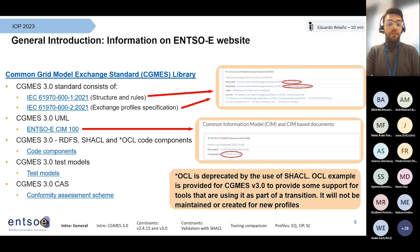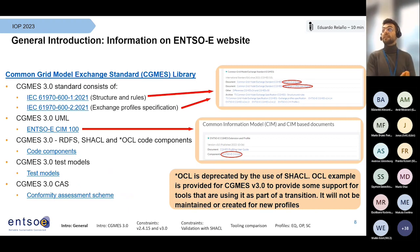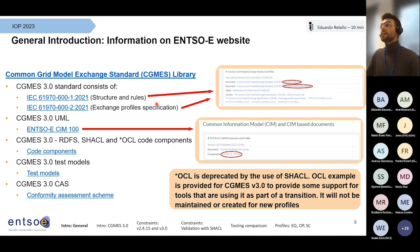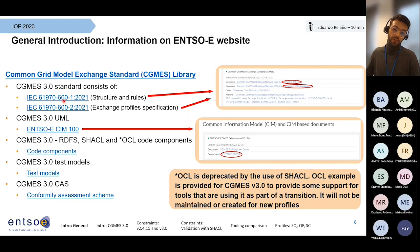Let me also introduce you to the organization of our NCOE website and where you can find information. CGMES 3.0 is a standard — an IEC standard. It consists of mainly two parts: the first defines the structure, rules, and dependencies among profiles; the second, the exchange profiles specification, goes deeper into the profiles. This is a screenshot from the NCOE webpage, and you can click on the links provided in the slides.